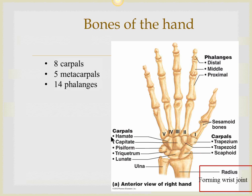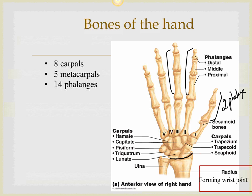The hand has eight carpal bones, five metacarpals, and fourteen phalanges. There are five digits, but the thumb has only two phalanges while all the others have three, giving fourteen total. Note that only the radius forms the wrist joint — the ulna does not participate.